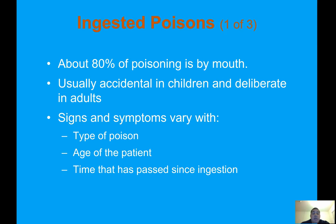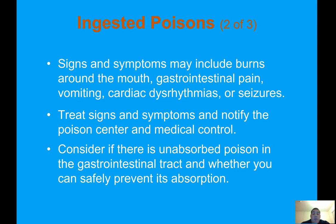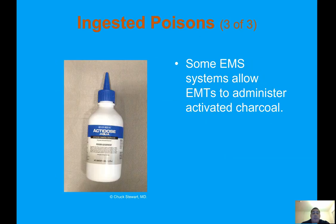About 80 percent of poisoning is by ingestion — usually accidental in children and deliberate in adults. Signs and symptoms vary with the type of poison, the age of the patient, and the time that has passed since ingestion. Signs and symptoms may include burns around the mouth, gastrointestinal pain, vomiting, cardiac dysrhythmias, or seizures. Treat signs and symptoms, notify the poison center and medical control, and consider whether there is an unabsorbed poison in the GI tract and whether you can safely prevent its absorption.